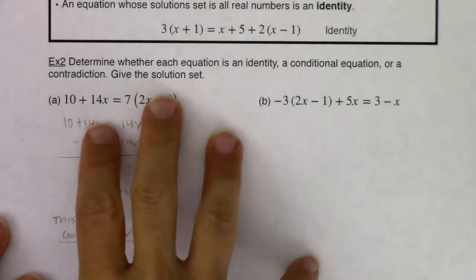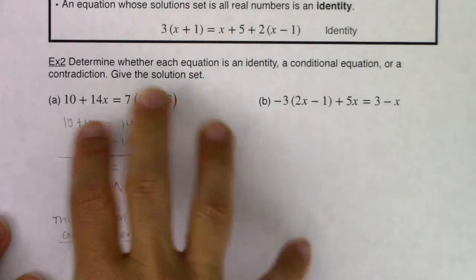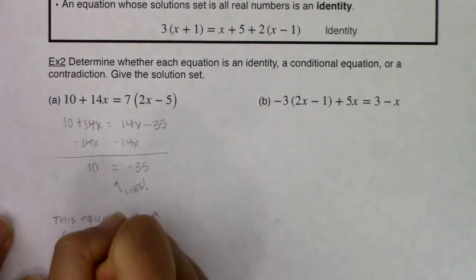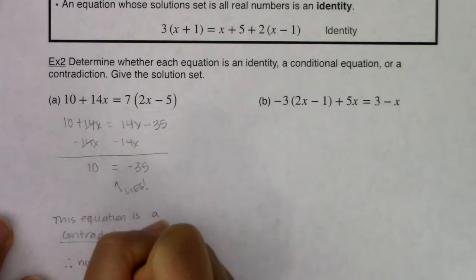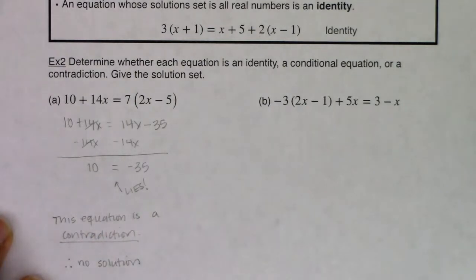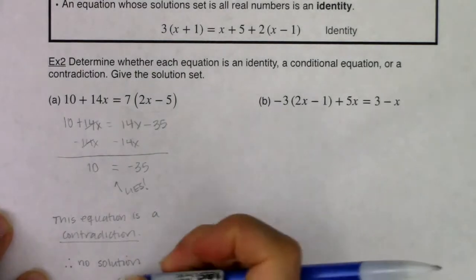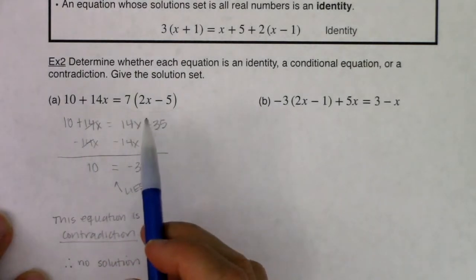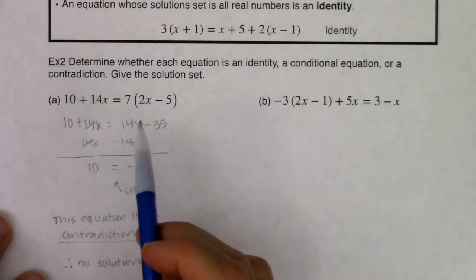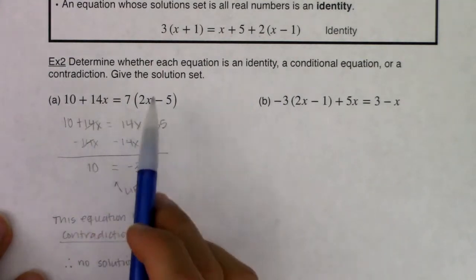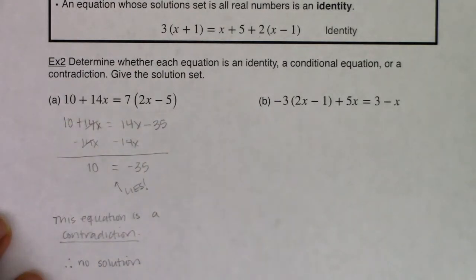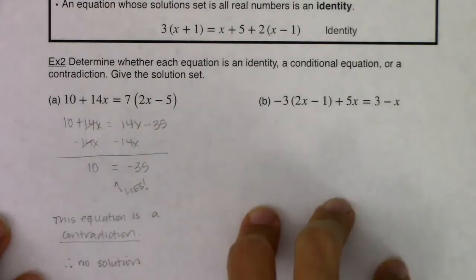The solution set for a contradiction is no solution. You can try plugging in any value — 1, 8, negative pi, 102, three-halves — and you will never get the left side to equal the right side.